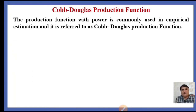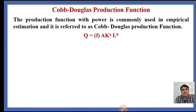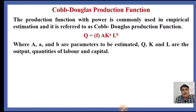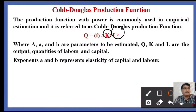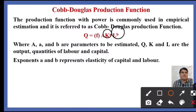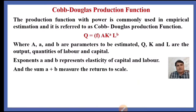The production function with power form, commonly used in empirical estimation, is referred to as the Cobb-Douglas production function. The general form is: output Q is a function of A * K^alpha * L^beta, where A is the productivity parameter and alpha and beta are parameters to be estimated. Q, K, and L are output, capital, and labor respectively. Alpha and beta represent the elasticity of capital and labor. The sum alpha plus beta measures the returns to scale.